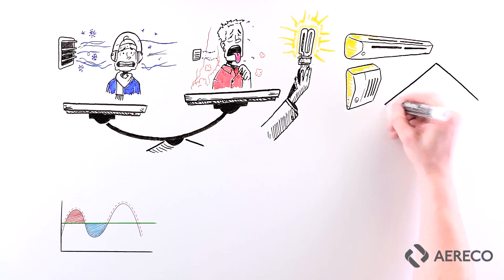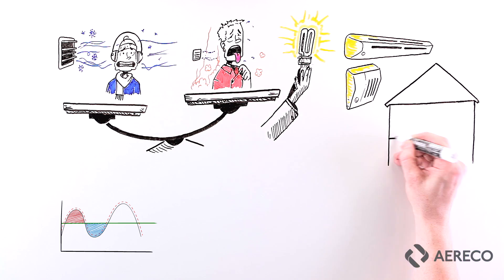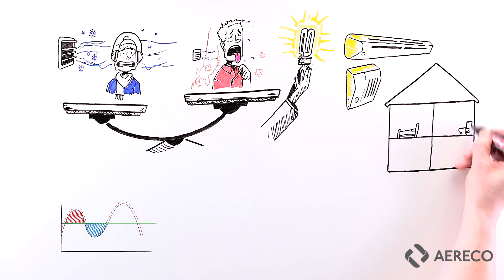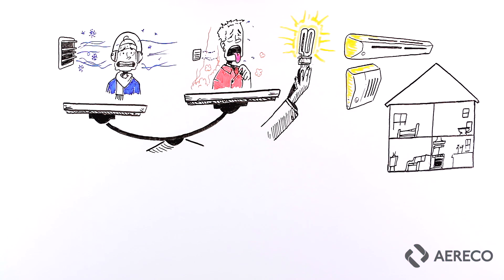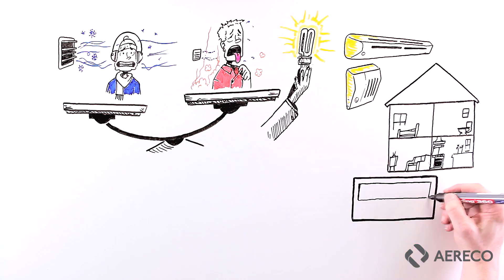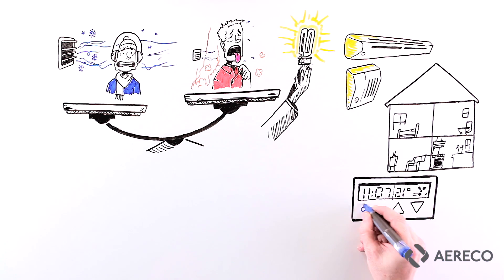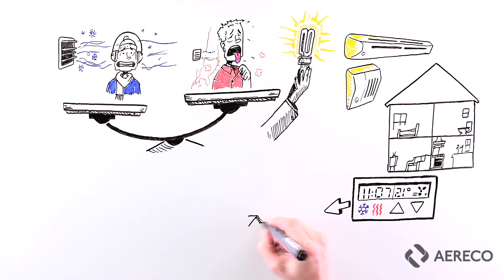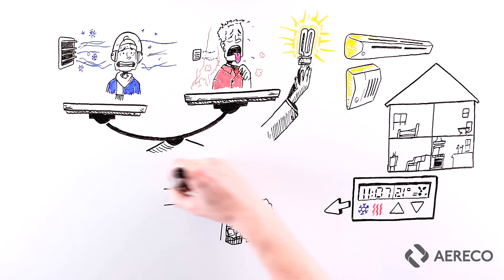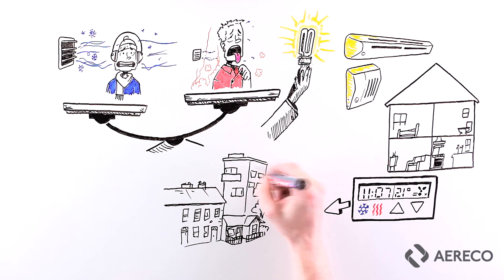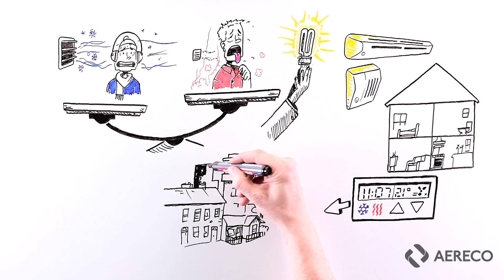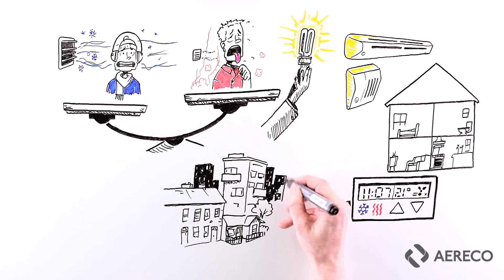Demand control ventilation, or DCV, is a way of adjusting ventilation automatically according to demand, with sensors that measure air quality or need in every room in every dwelling at any time. This approach is as logical as controlling your heating with a thermostat, and can be applied to many systems — from passive stack ventilation through mechanical extract systems to MVHR — in individual homes and collectively in multi-family buildings.